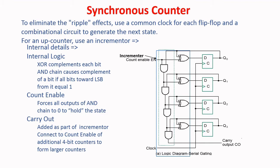Count Enable forces all outputs of the AND chain to 0 to hold the state. Carry Output is added as part of the incrementer, connected to the count enable of additional 4-bit counters to form larger counters.